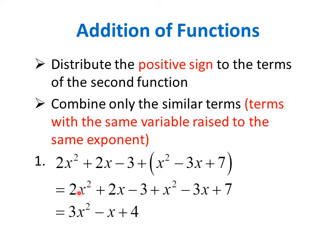So 2x squared plus 1x squared, that is 3x squared. Now we also have 2x terms. So we have 2x minus 3x — 2 minus 3 is negative 1, so we have negative 1x. Negative 3 plus 7 is 4. Therefore, the sum of the two functions is 3x squared minus x plus 4.